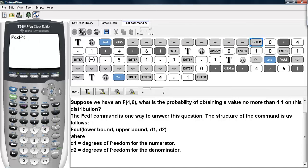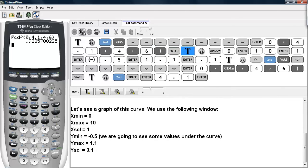And there it is. Then we'll enter in the lower bound, then the upper bound of 4.1 for our example, then the numerator degrees of freedom, which is 4, and the denominator degrees of freedom, which are 6. So we see the value is about 0.938.